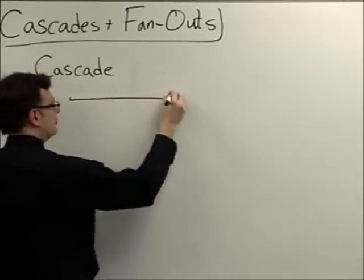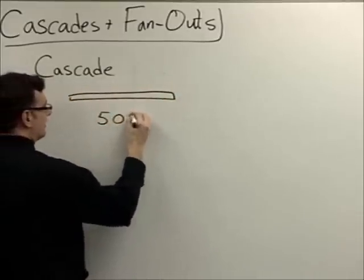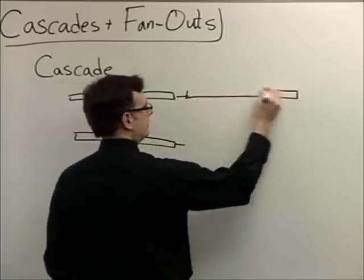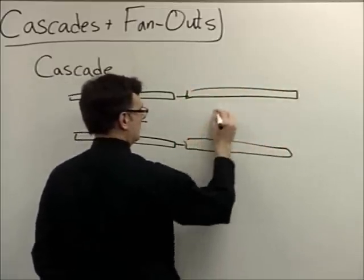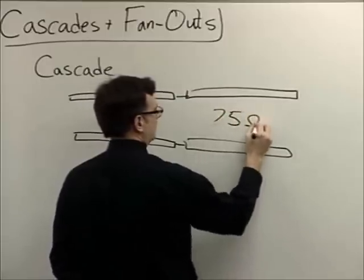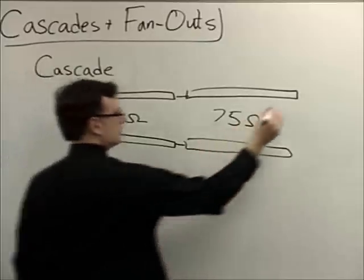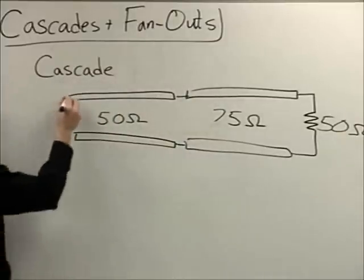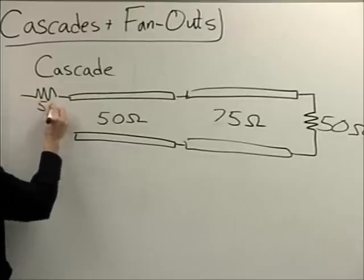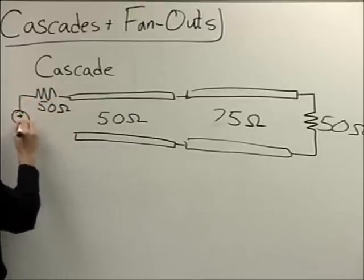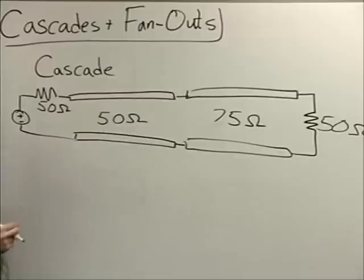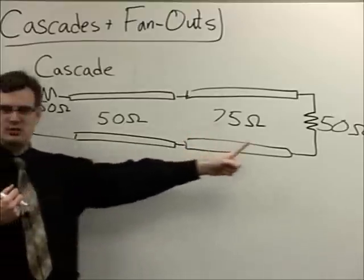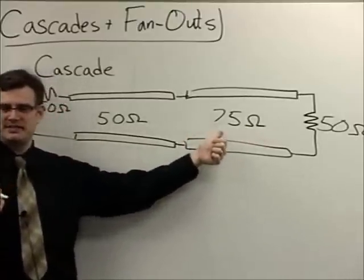Let's say that you have a 50-ohm transmission line and you have connected it immediately to a 75-ohm transmission line, with a 50-ohm resistor at a 50-ohm source. This could be, for example, a 50-ohm coaxial cable that you thought was matched because you wanted an extender cable matched to a 50-ohm load, but you accidentally picked up a 75-ohm cable.